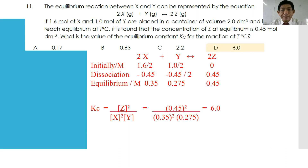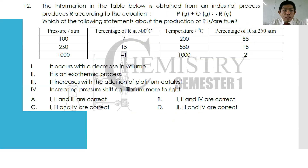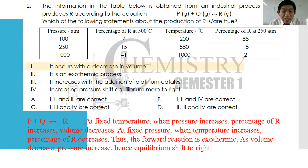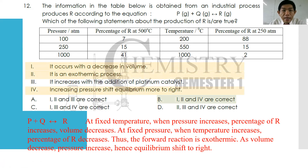Number twelve: information from an industrial process produces R in P(g) + Q(g) → R. Looking at the data: as pressure increases, the percentage yield of R increases — meaning R has fewer total moles of gas on the right side. As temperature increases, the percentage of R decreases — meaning the forward reaction is exothermic. Statement one: it occurs with a decrease in volume — true. Statement two: it is an exothermic process — true. Statement three: yield increases with platinum catalyst — wrong, catalyst does not influence yield. Statement four: increasing pressure shifts equilibrium further right — true. Answer: 1, 2, and 4 only.